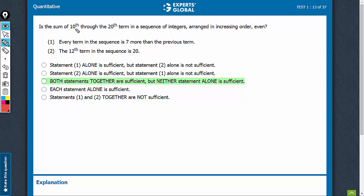Is the sum of these 11 terms, 10th to 20th, in a sequence when arranged in increasing order even? That's the question. Let's look at statement 1. Each term in the sequence is 7 more than the previous term. So this says it's something like a, a plus 7, a plus 14, something like this.